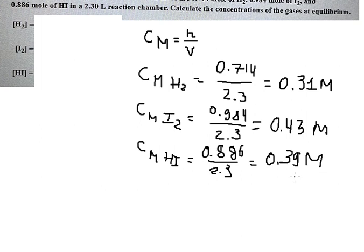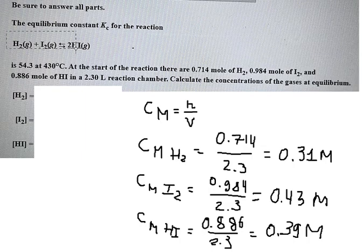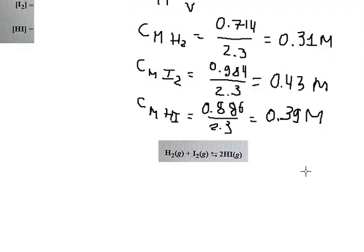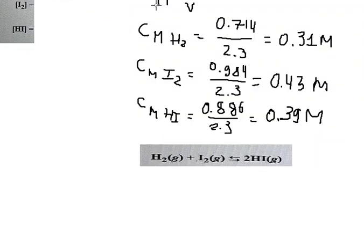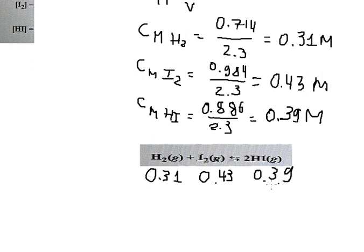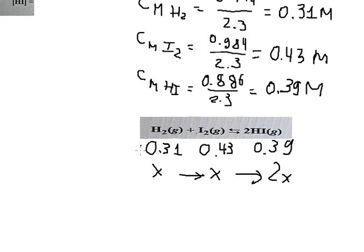So after we have this one, we have this equation. I will put this value here, this value here, and this value here. Next we have x that we go in this way because we have number 2 in here that is about 2x. This is before reaction, this is during reaction, this is after reaction.